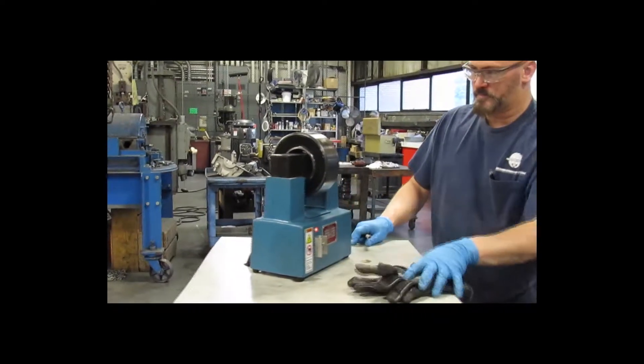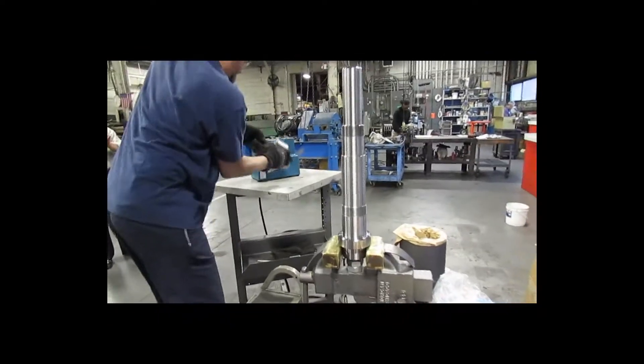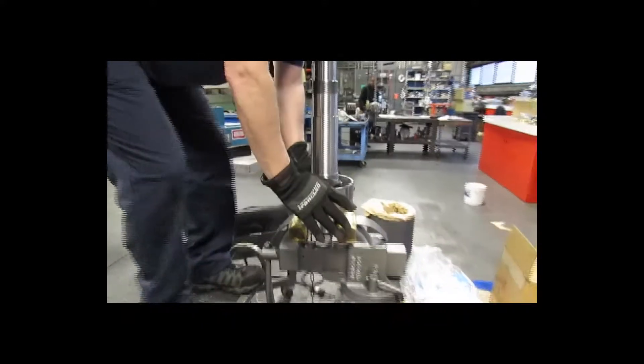The induction heater is energized. When the bearing reaches the proper temperature and the bearing crayon melts, the bearing must be installed immediately onto the shaft to prevent it from binding on the way down. The bearing is fully seated.